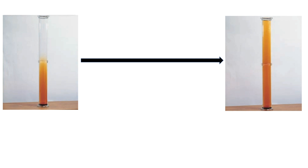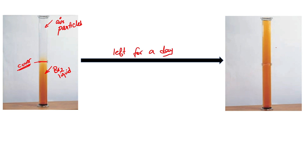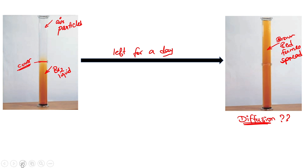Here we have an experiment to illustrate the diffusion process. We have two gas jars on top of each other. The top jar is filled with air particles, and the bottom jar has bromine liquid. In between, we have a cover to separate the gas jars. If these two gas jars are left for a day, by the end of the day we will find brown-red fumes spread evenly throughout the gas jars. This happens because of diffusion.